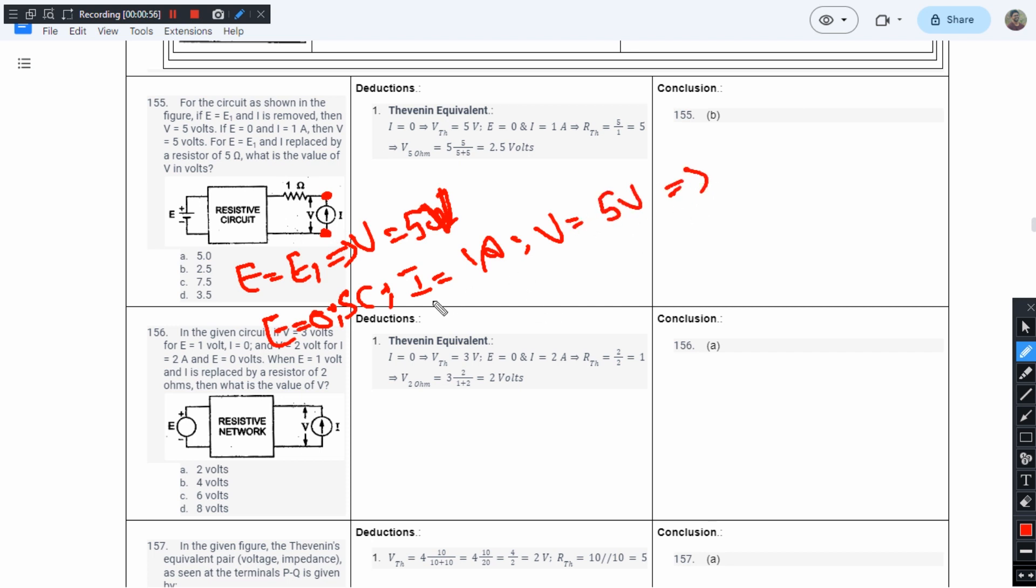This is the classic condition of finding Thevenin resistance when we have dependent sources. From here I can say the Thevenin resistance is actually equal to V by I, that is 5 ohms. Since we were talking about open circuit here, this is definitely Thevenin's voltage which equals 5 volts.